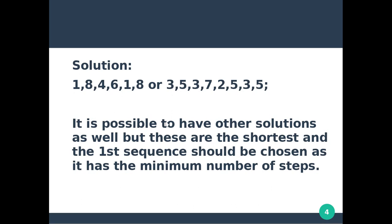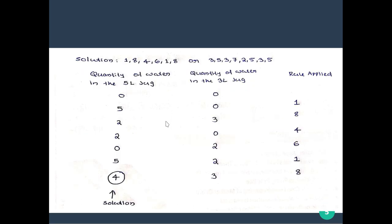Now we have a solution. We have two solutions here. The first solution shows the quantity of water in the 5-liter jug and the 3-liter jug at each step, applying the rules from the start.